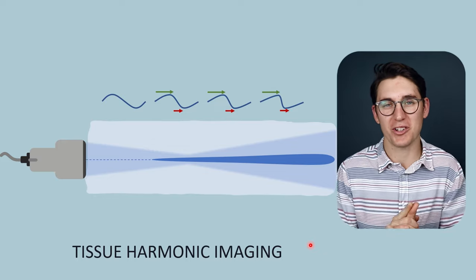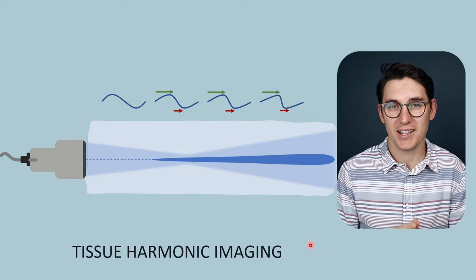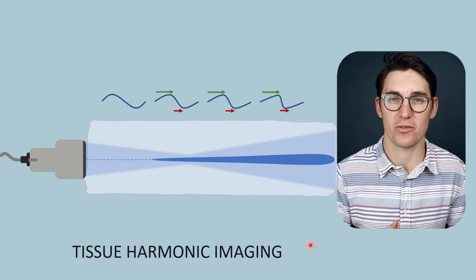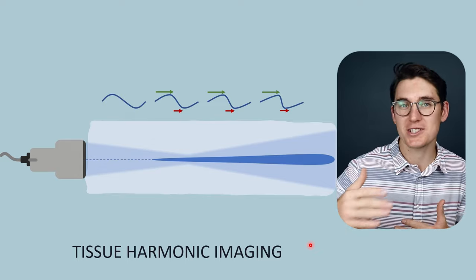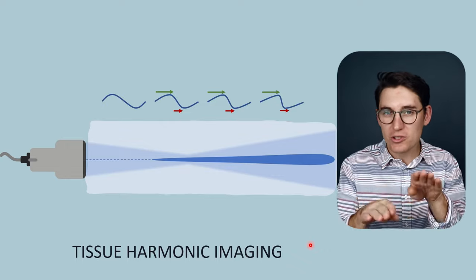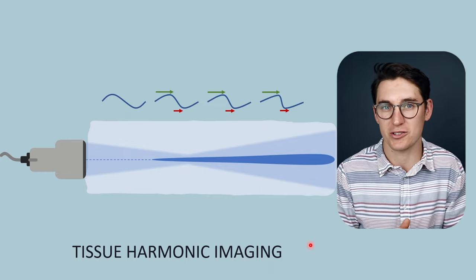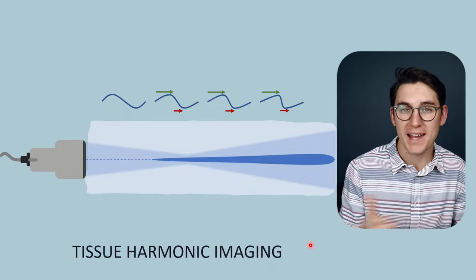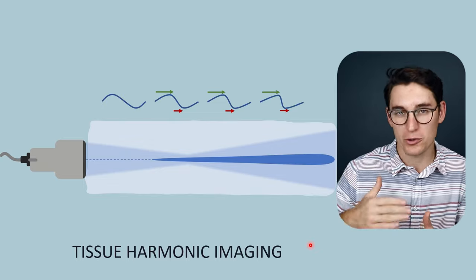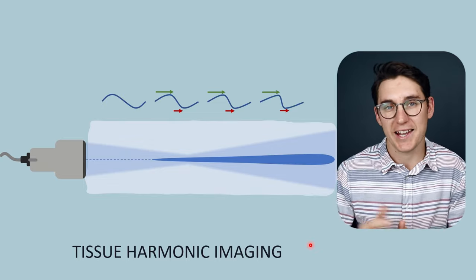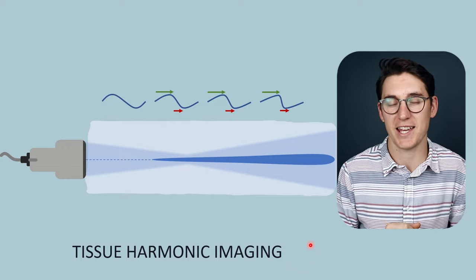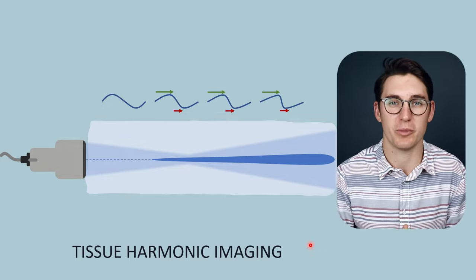Hello and welcome back. Today we're going to be looking at tissue harmonic imaging. Up until now in this course we've predominantly looked at pulse echo ultrasonography, where we send an ultrasound pulse into tissues. That pulse will reach a tissue boundary and if the tissues on either side differ in acoustic impedance, some of that pulse will return back to the transducer as an echo and some will be transmitted deeper into the tissues. It's the timing and intensity of those returning echoes that we use to create our B-mode image.